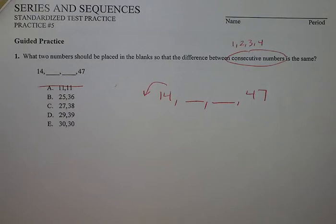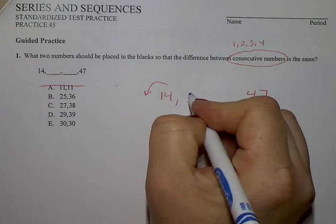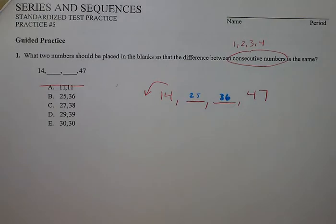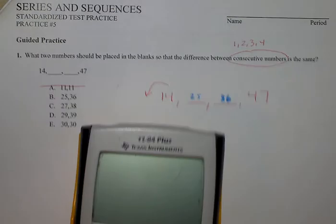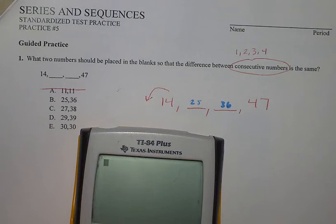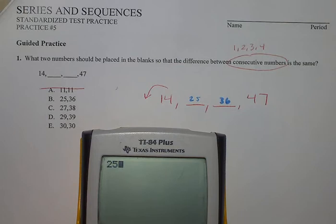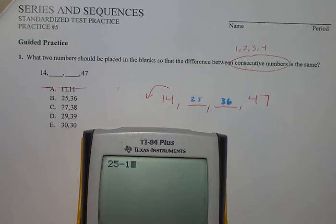So I'm going to start with B. So really lightly, I'm going to write a 25 and a 36. And if you can do quick mental math, that's going to speed things up for you. If not, you're going to grab a graphing calculator. The difference between 14 and 25, you could subtract them, is a difference of 11.